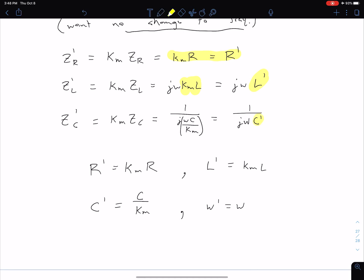As we designed, we have no change in frequency. These are our key equations for magnitude scaling. We choose what value we want for Km in terms of how we want to adjust these impedances, and then we can adjust our resistor, inductor, and capacitor values accordingly.